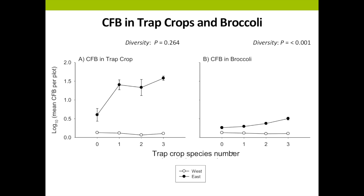Now we're looking at flea beetles in our trap crop and broccoli. Panel A shows flea beetles D-vac'd out of our trap crop. The x-axis is trap crop species number: zero for controls, one species, two species, and all three (high diversity). The y-axis is log10 mean flea beetles per plot. As before, flea beetles attained higher densities in trap crops than bare ground — as expected. However, flea beetle densities did not differ between high and low diversity trap crop plantings, which is not totally unexpected since we used the top three most effective species from what we learned in 2009.